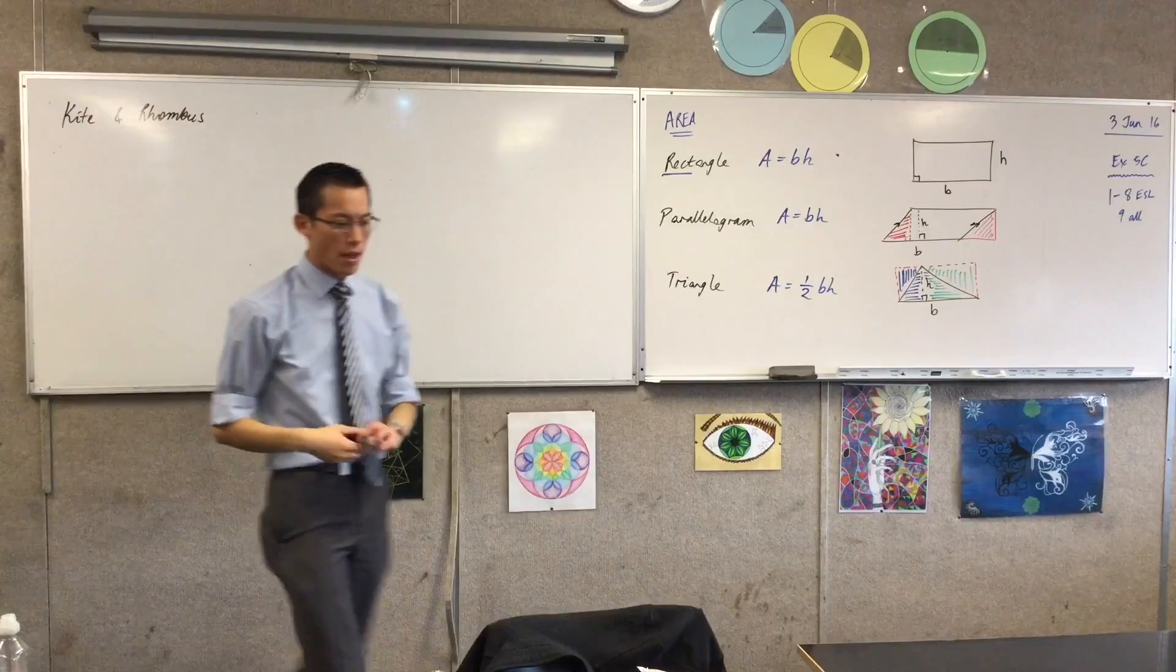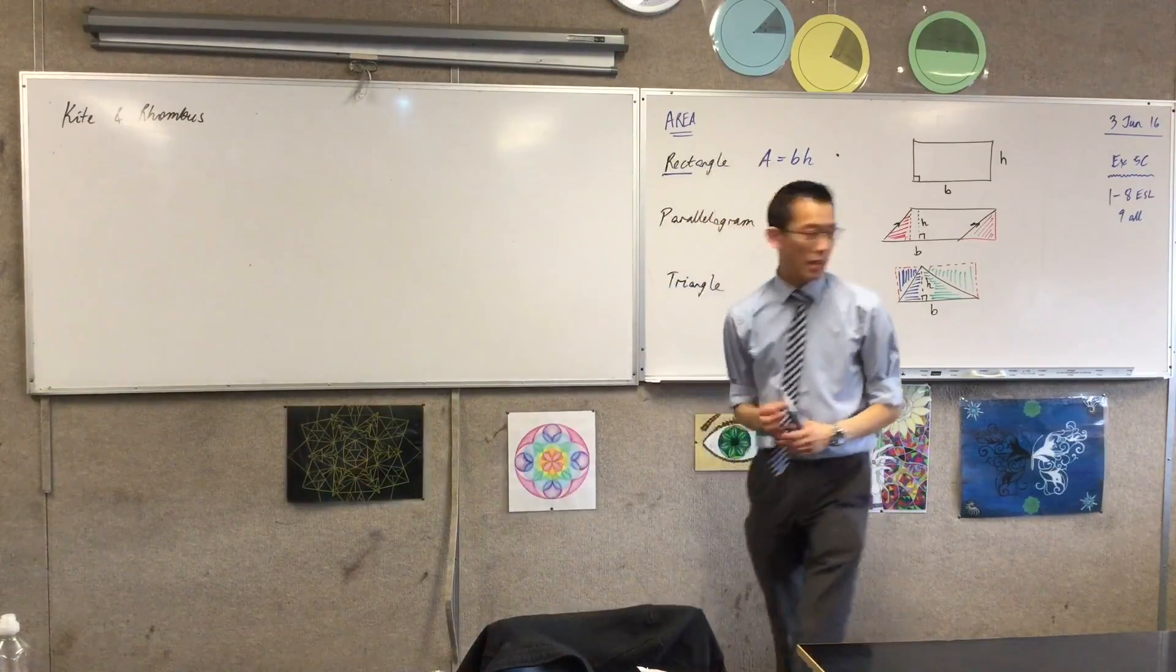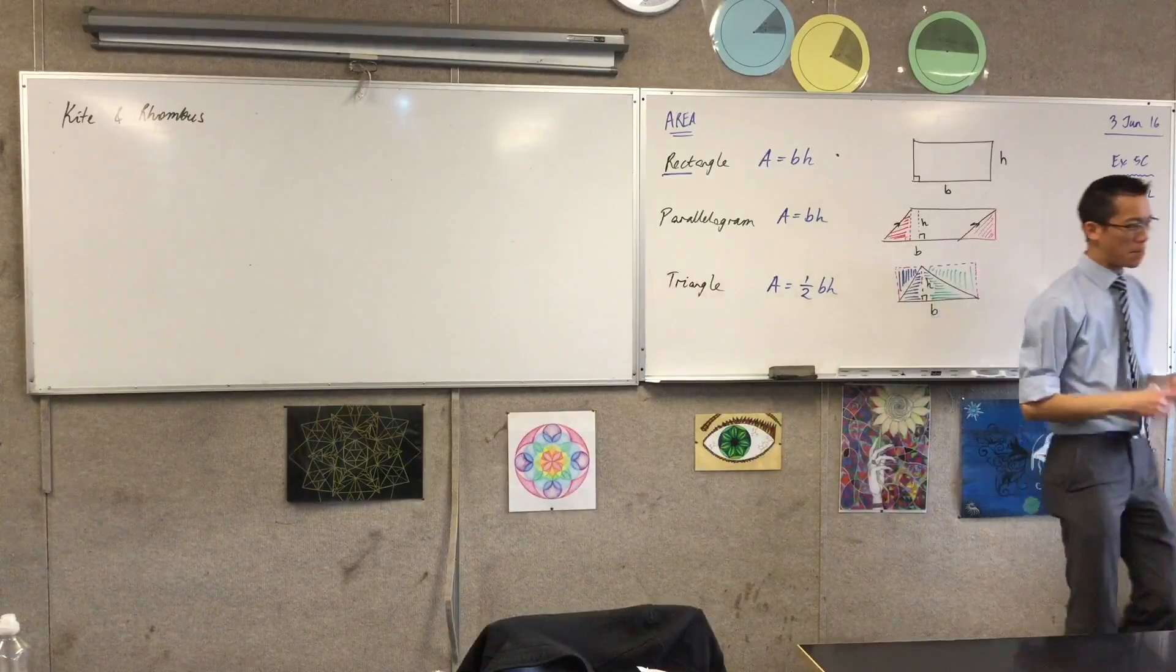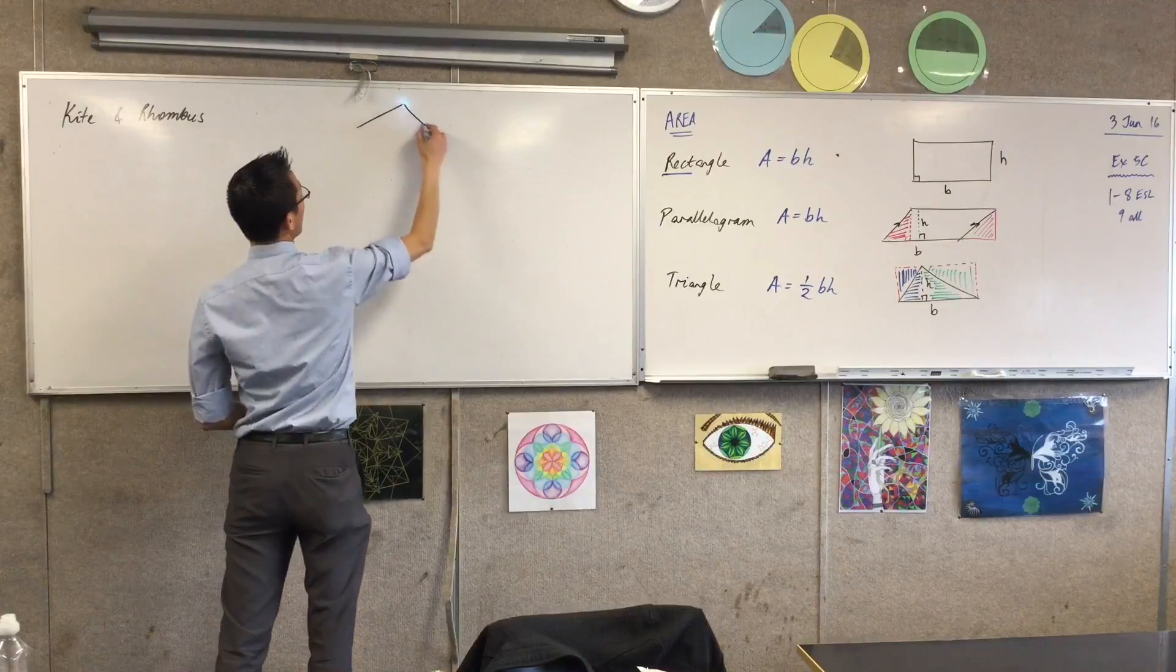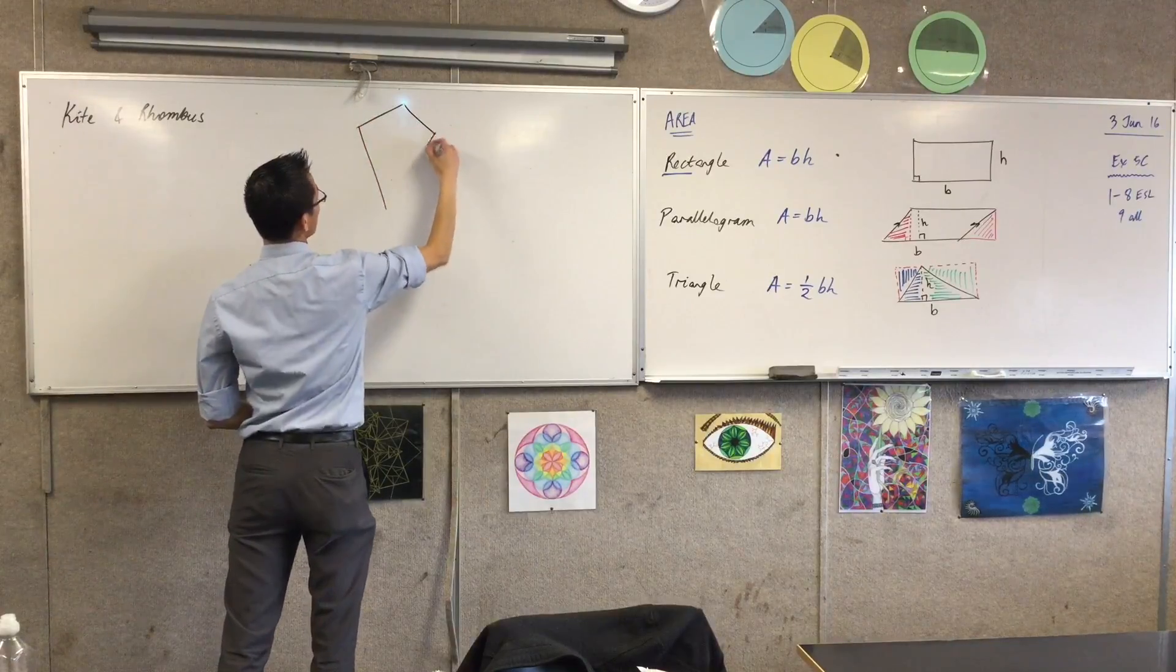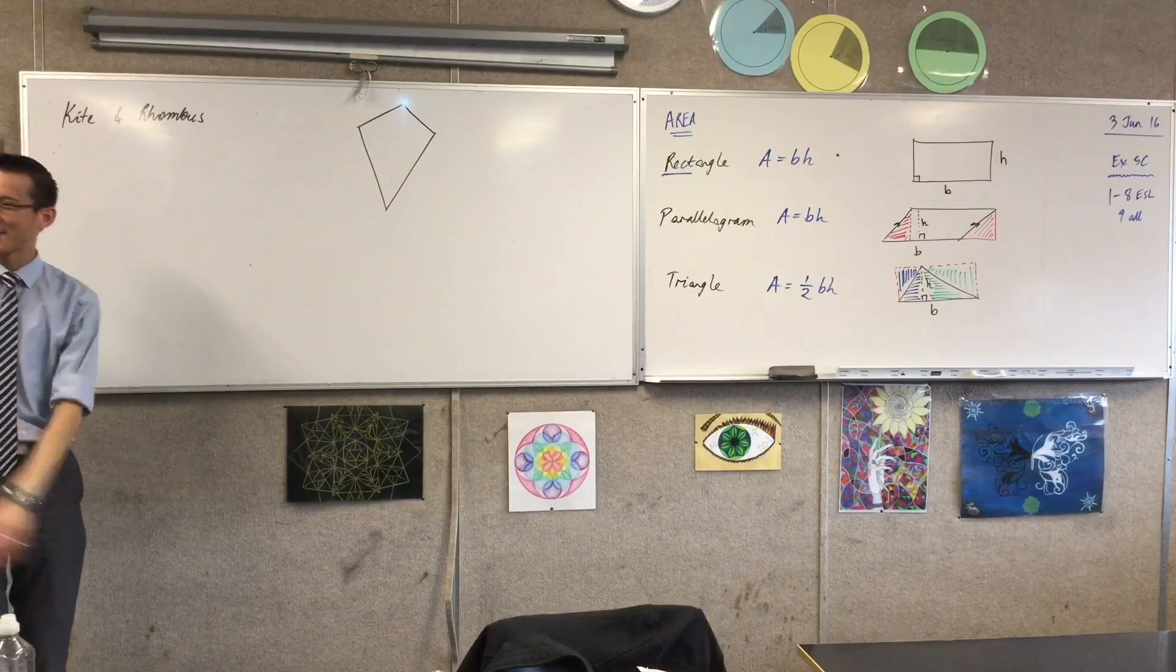The kite and the rhombus. Now, kites and rhombuses are kind of like cousins. If you want to picture a kite, in fact, let's all draw a kite now. If you picture a kite like so. It's a diamond. Our little word for kites is a diamond.